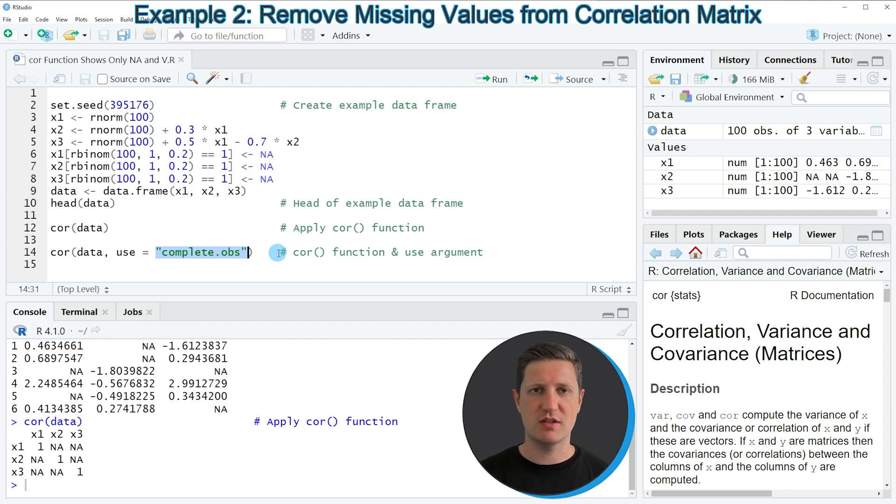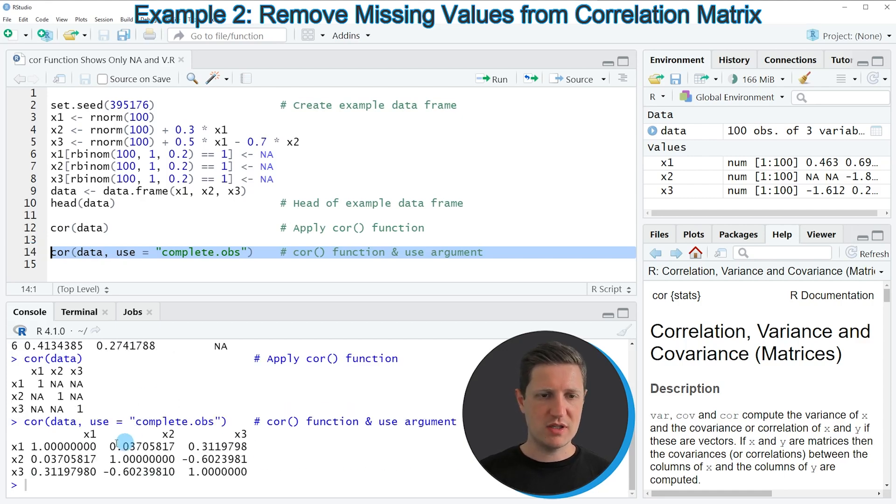For that reason it is possible to calculate the correlations between our variables. So if you run line 14 of the code you can see that another correlation matrix is returned. And as you can see this time the proper correlations between our variables are returned.